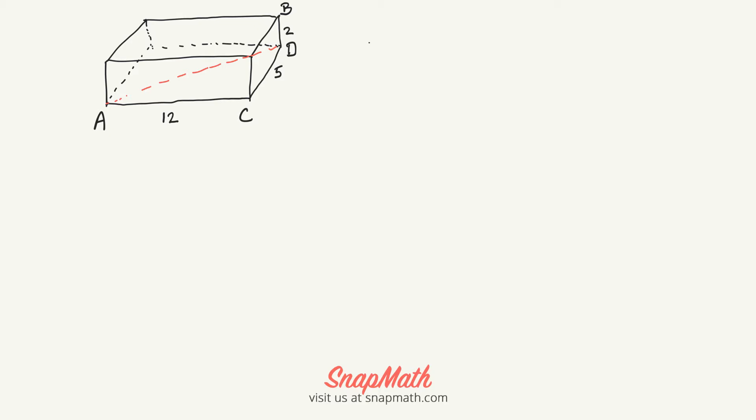The Pythagorean theorem is A² + B² = C². So we have 12² + 5² = C².